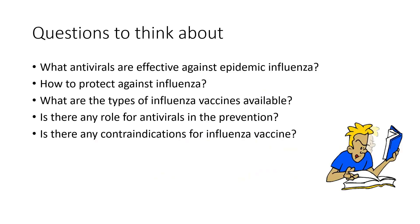The neuraminidase inhibitor used is Tamiflu. This is the antiviral that is effective against epidemic influenza. Tamiflu is sometimes also used as prophylaxis, and we also have influenza vaccines available.